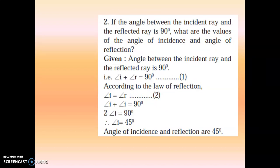Moving further. If the angle between the incident ray and the reflected ray is 90 degrees, what are the values of the angle of incidence and angle of reflection? We have been given the value between the incident ray and reflected ray as 90, and we have to find the angle of incidence and angle of reflection. Together, the value of angle I and angle R is given to us as 90 degrees. According to the law of reflection, angle I is equal to angle R — angle of incidence is equal to angle of reflection — and together it is 90 degrees.